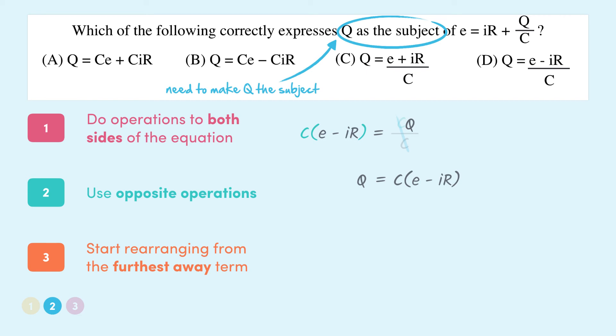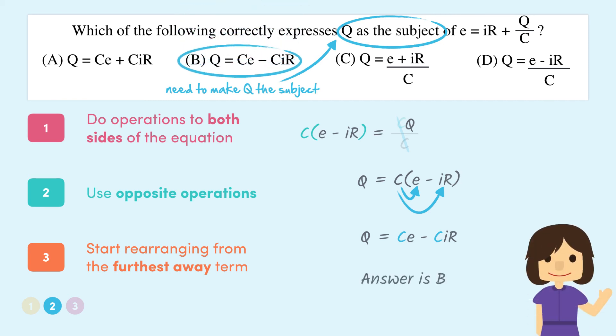To simplify this, we need to expand the brackets out like we did in the previous video. We do this by first multiplying C by E, giving us CE, and then multiplying C by minus IR, which is minus CIR. So finally we have Q is equal to CE minus CIR, which we can see is the same as B.